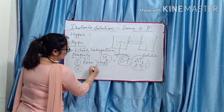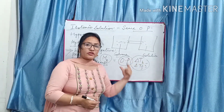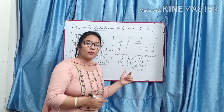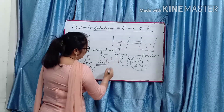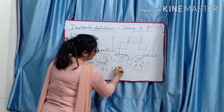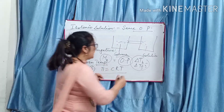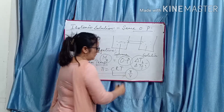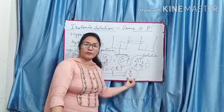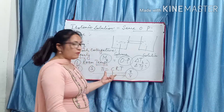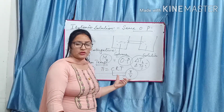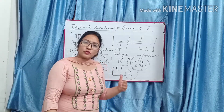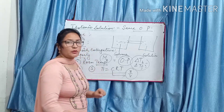So it is the best colligative property for the determination of molar masses of solute. Osmotic pressure ka formula hai pi = CRT, where C is molarity. Instead of molality, molarity is used here, which makes it more practical. Yeh question bahut important hai.